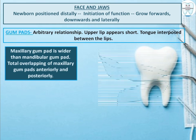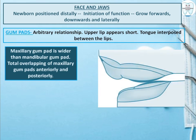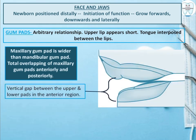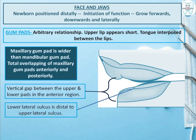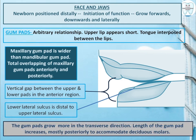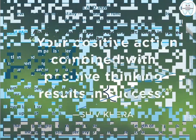There is total overlapping of the maxillary gum pads anteriorly and posteriorly, with a vertical gap between the upper and lower gum pads in the anterior region. The lower lateral sulcus is distal to the upper lateral sulcus. The gum pads grow in the transverse direction, and length increases mostly posteriorly to accommodate the deciduous molars.